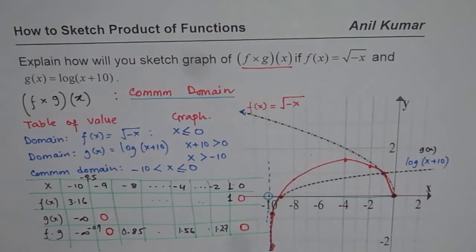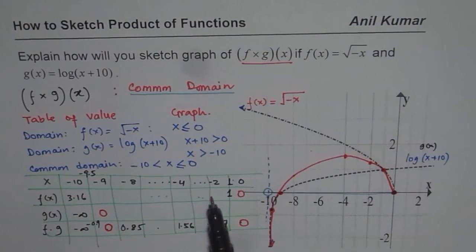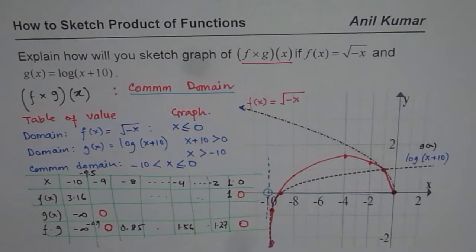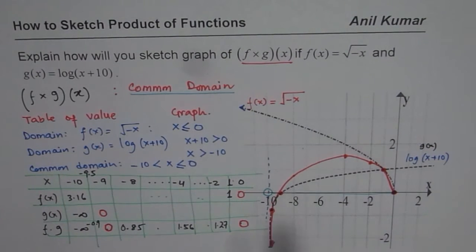That is how you can sketch the graph of the product of functions. What you should do is: first make a table of values for f of x and sketch it, then do the same for g of x, and then multiply those values to get the points which can be connected to give the graph of the product of functions. Remember, a critical point here is that we should always be working on the common domain — so first find the common domain, then make the table of values, and then plot your graph. I hope this helps you understand. Thank you and all the best.